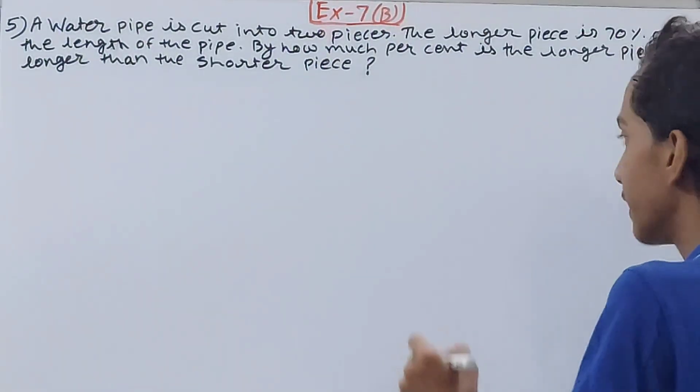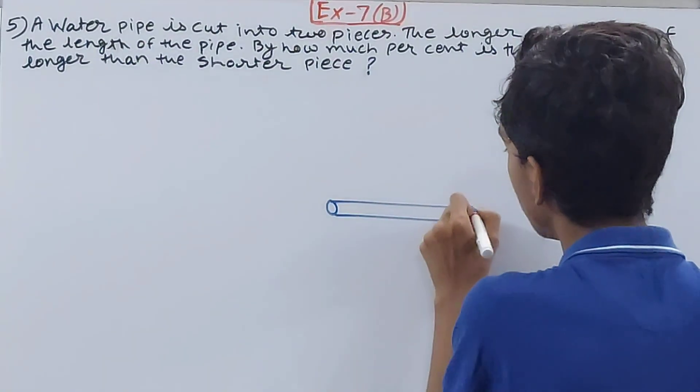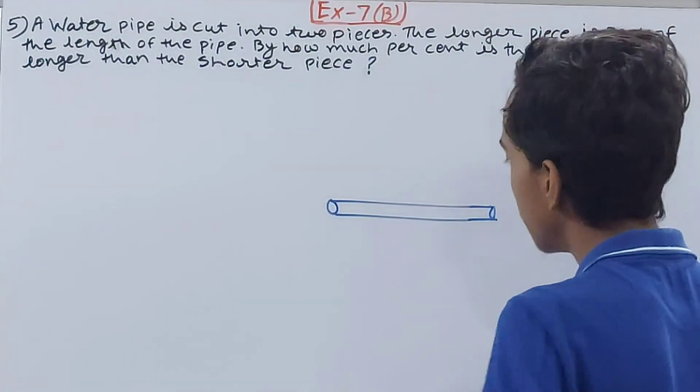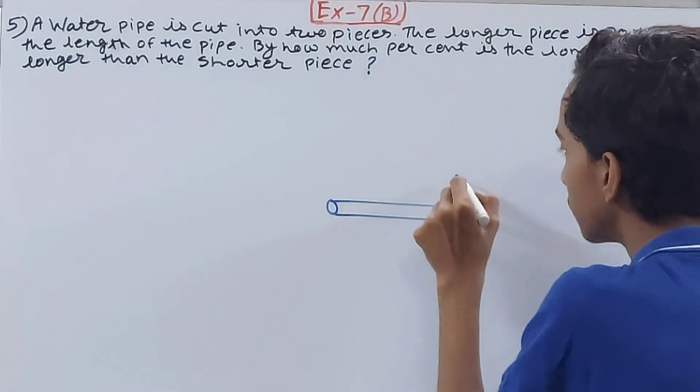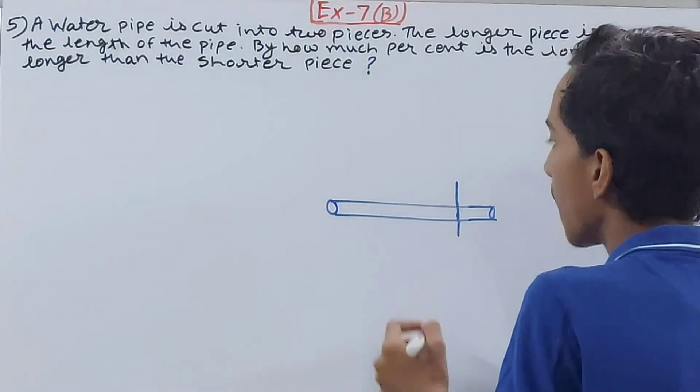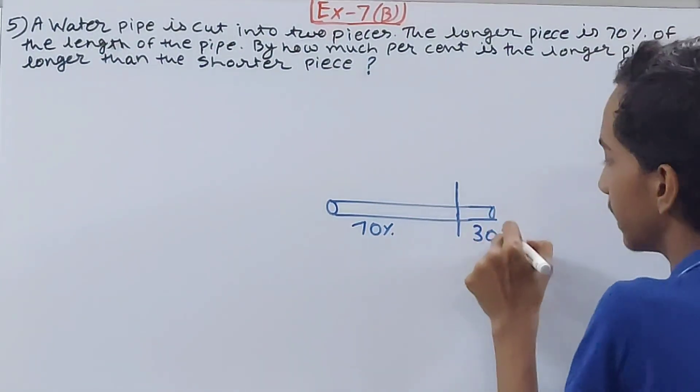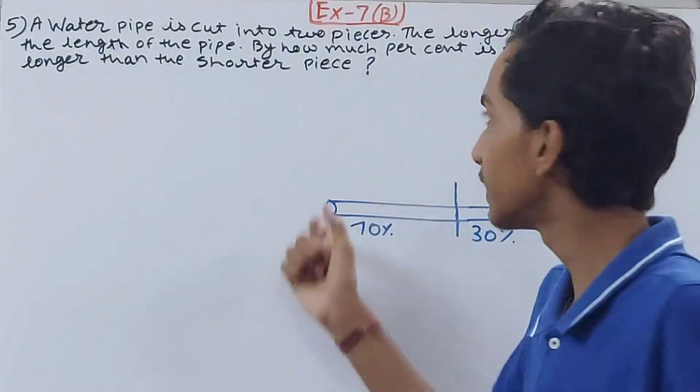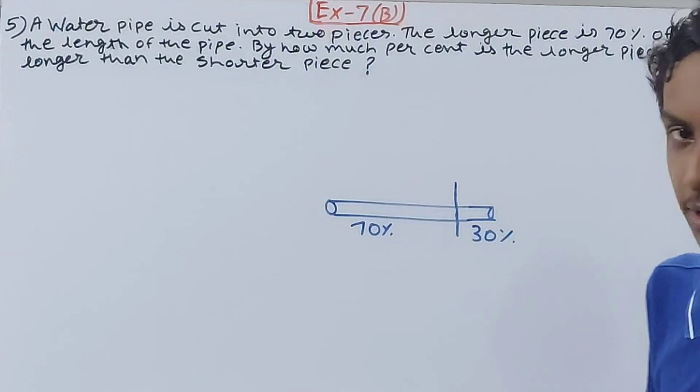Try to understand it like this: suppose this is my pipe. It is cut from here. This part is 70%, this part is 30%. Then if one part is 70% according to this question, then the other part will be 30% because the total is 100%.